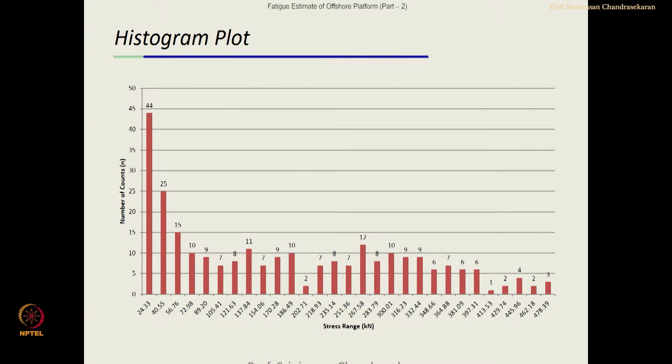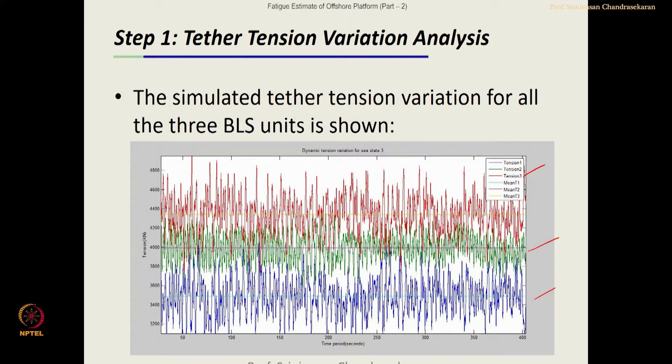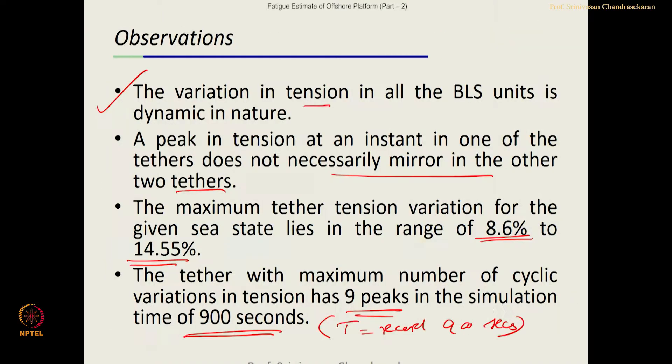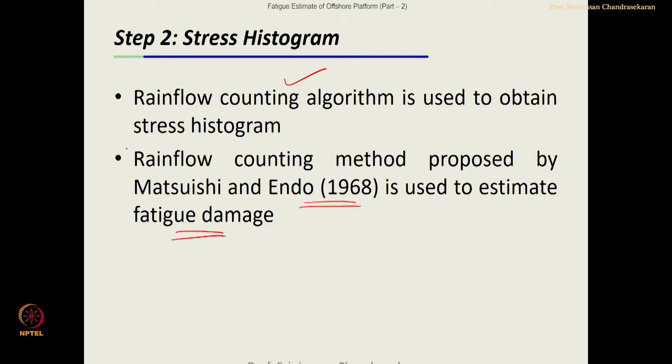The typical histogram what we got from the typical stress time history. I repeat again, we pick up any one signal. For example, in this case, it is buoyant leg 1. We pick up the stress history. From the stress history, we used the rain flow counting method.